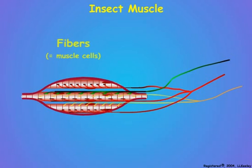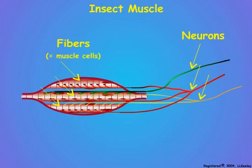Because insects are small, they have only one or several fibers in any muscle, and only one to three neurons are used to control those muscle fibers. In this example, three muscle fibers make up this muscle unit with three controlling neurons.